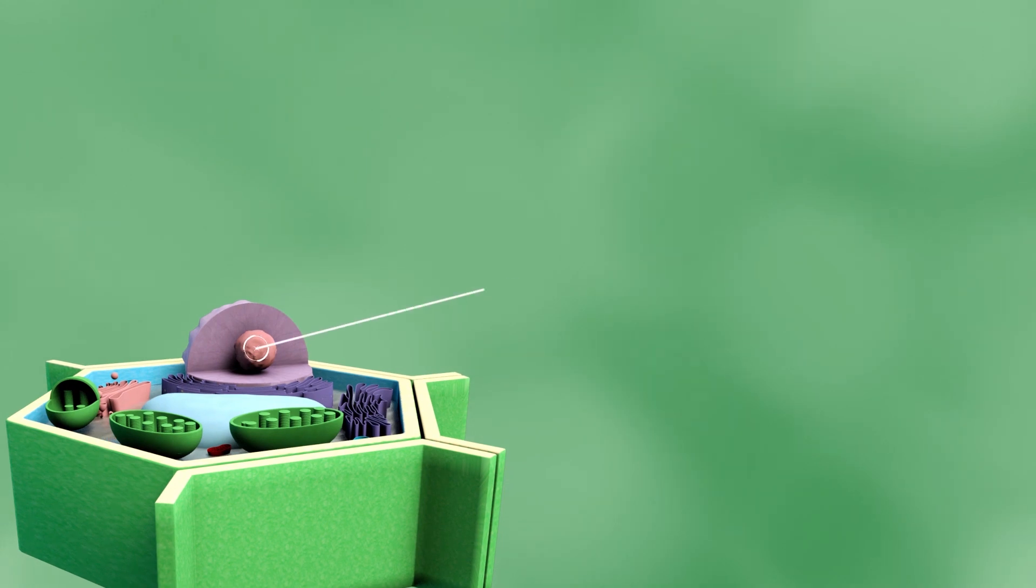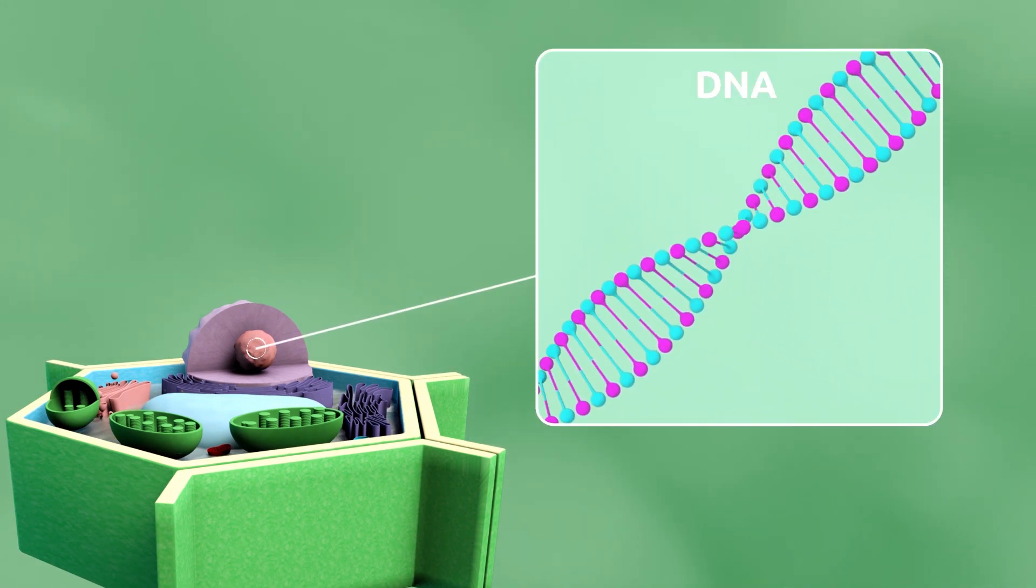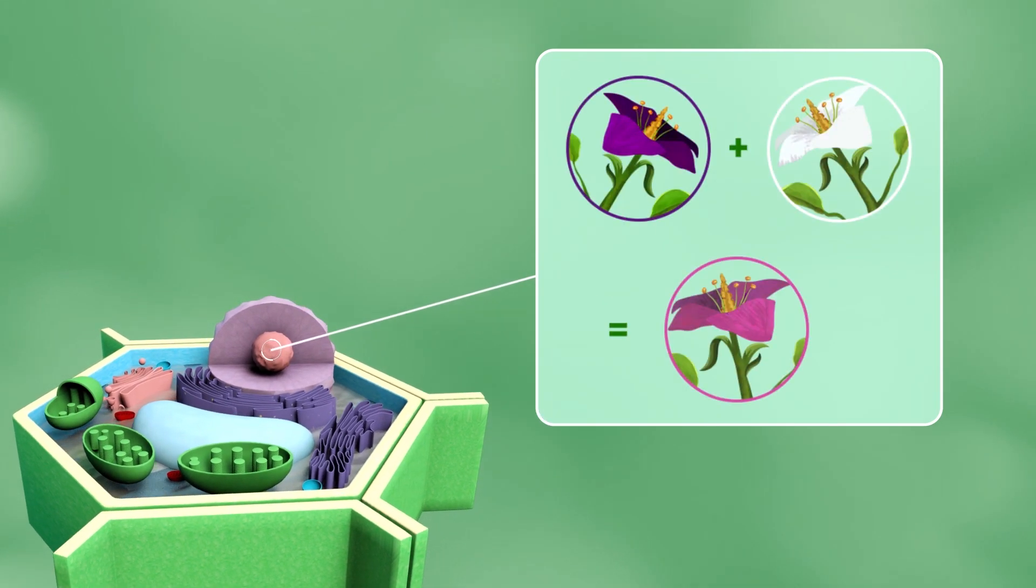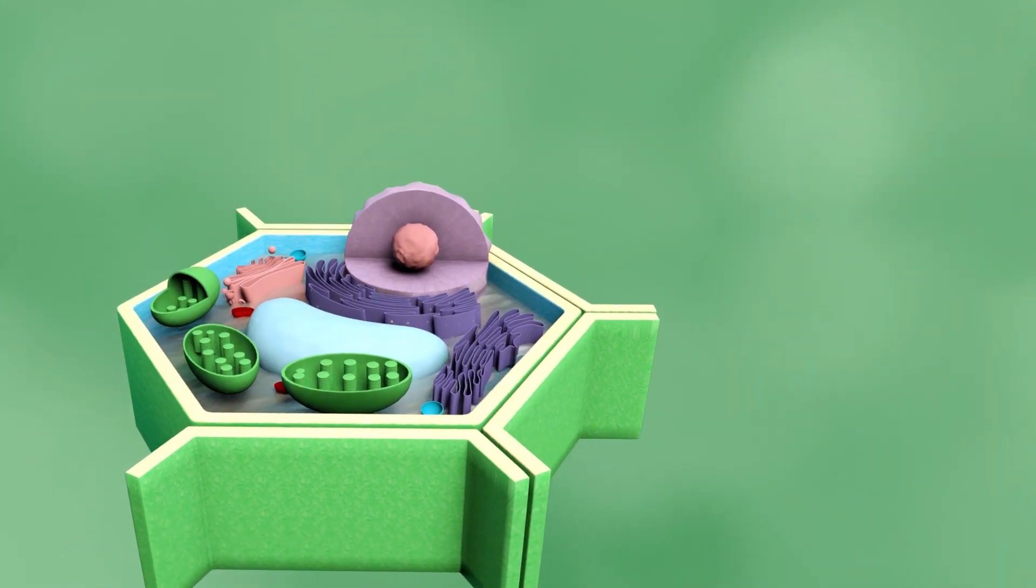DNA is made up by genes, which hold genetic information. When plants reproduce, the genetic material will pass on to the new plant. For this reason, new plants will have the same characteristics.